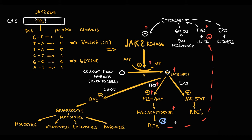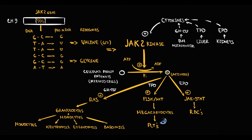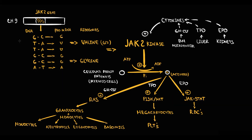Importantly, when platelets reach normal values, the liver begins to decrease the production of thrombopoietin. So now the stimulation of JAK2 kinase will decrease, the stimulation of the PI3K-AKT pathway will decrease, and thereby the production of platelets will decrease — and by this we maintain the normal amount of platelets in our blood. And everything is fine until a mutation occurs in the JAK2 gene.